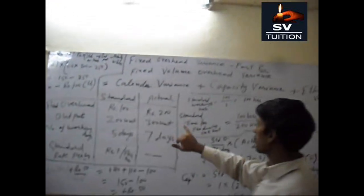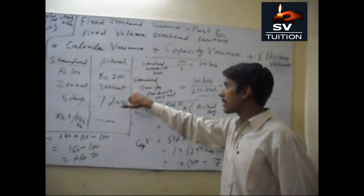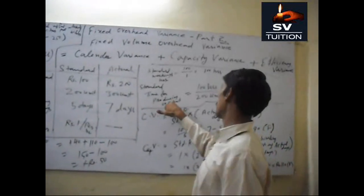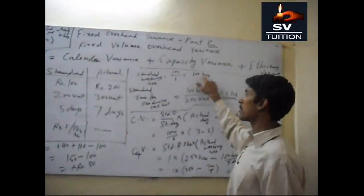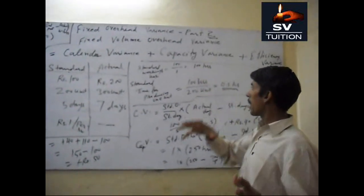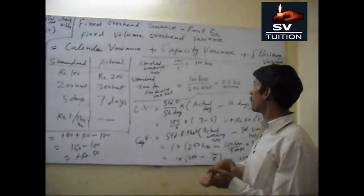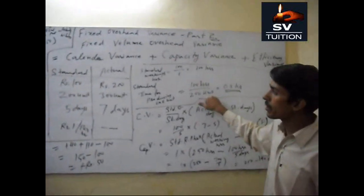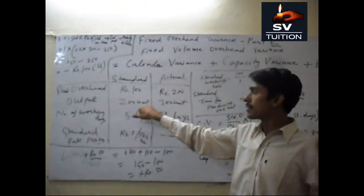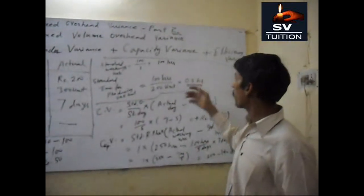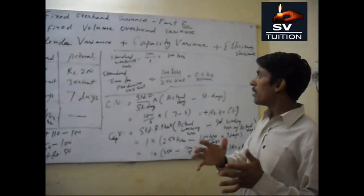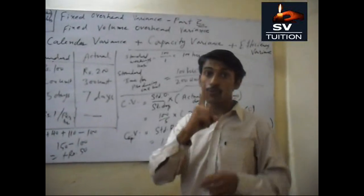Now we will calculate standard time for producing 1 unit. This is 100 hours, this we have calculated earlier divided by 200 units. This is the standard output. This is 0.5 hours which is standard time for producing 1 unit.